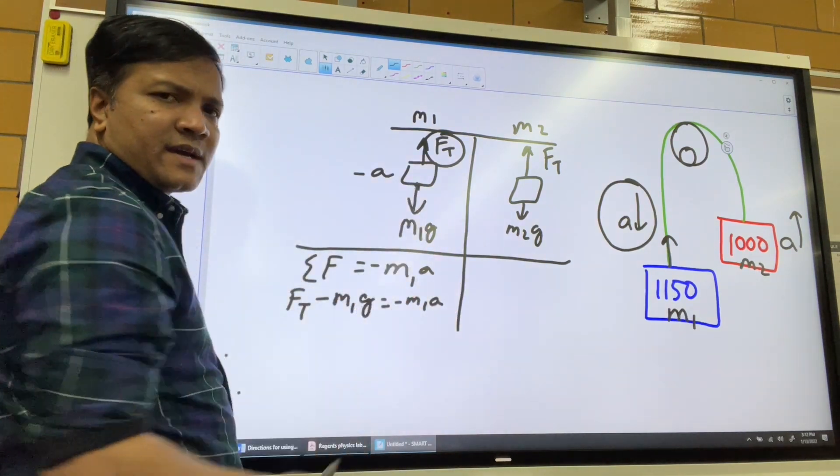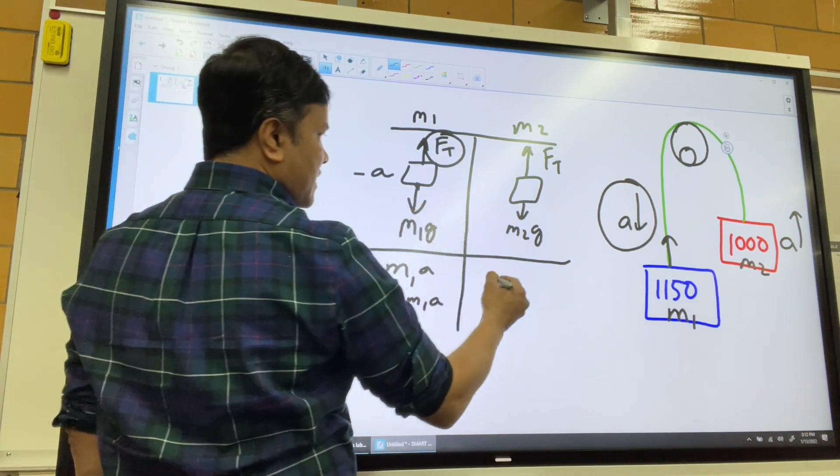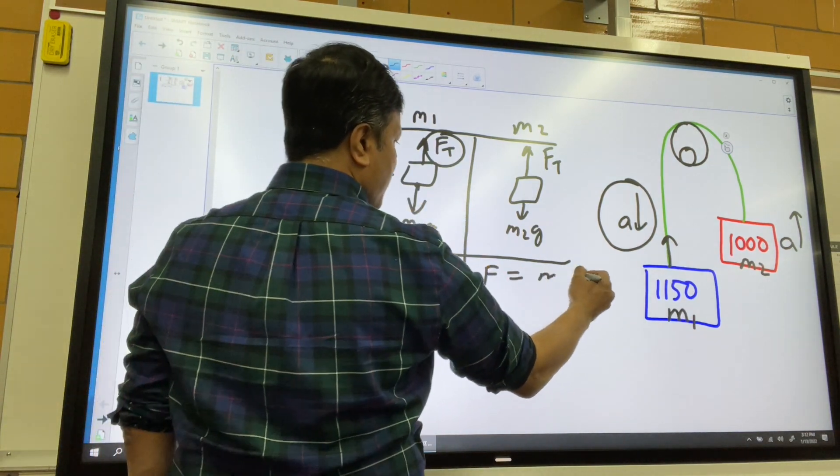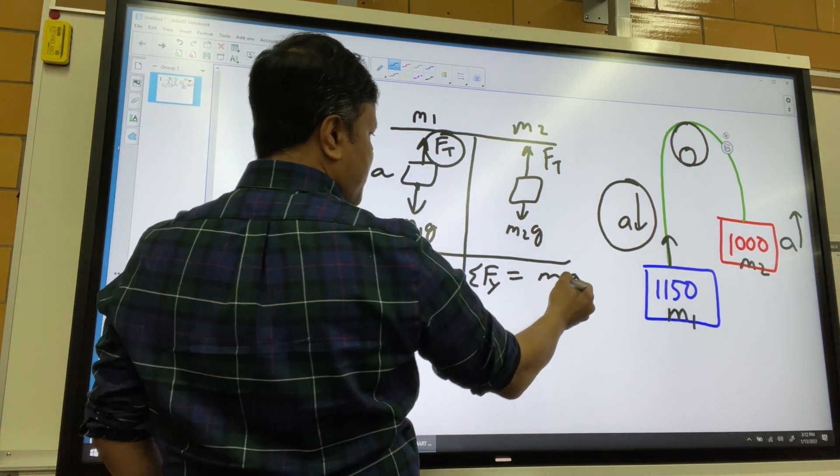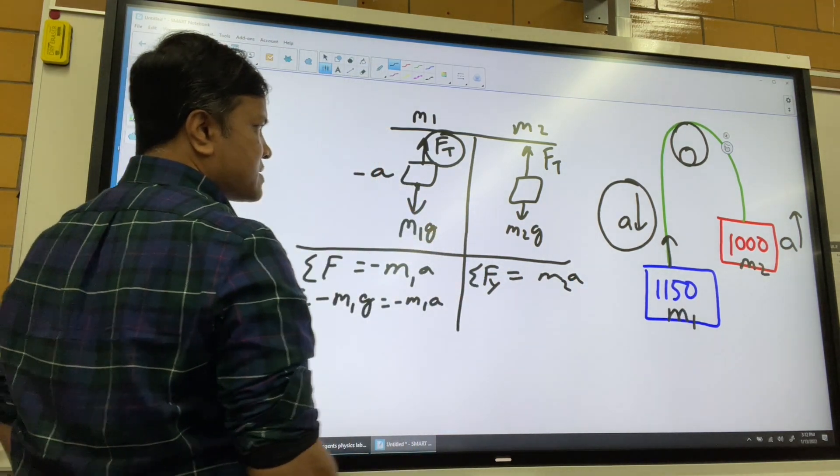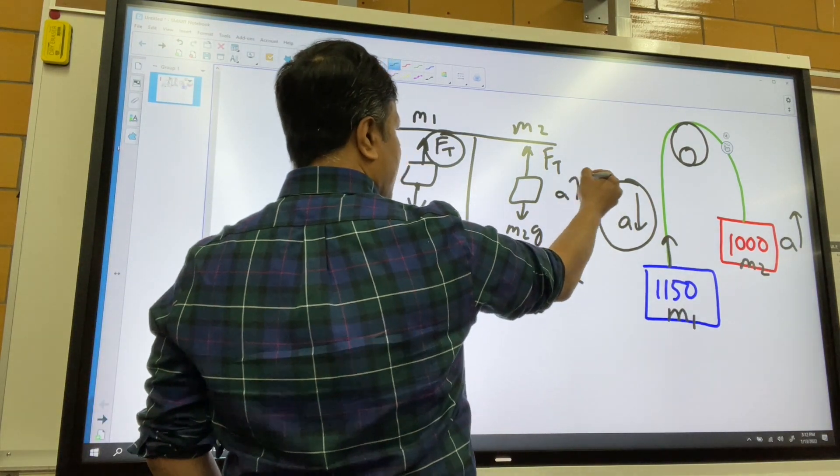What about over here? F equals MA in the Y direction. This is positive because this is M2A. This is positive because this is accelerating up.